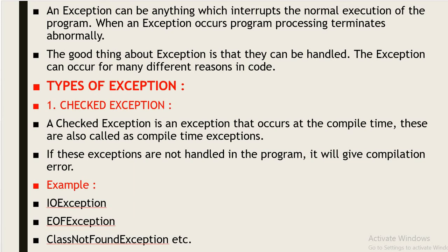An exception can be anything which interrupts the normal execution of the program. When an exception occurs, program processing terminates abnormally. The good thing about exceptions is that they can be handled. Exceptions can occur for many different reasons in code, due to programmer mistakes.